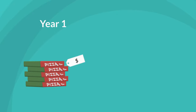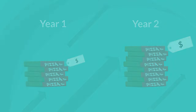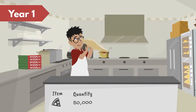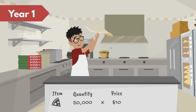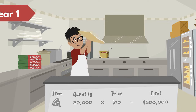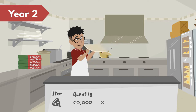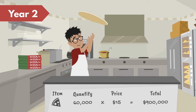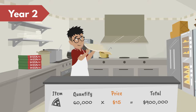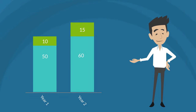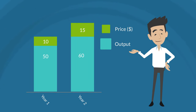Not necessarily. It is likely that both the prices and quantities increased from year 1 to year 2. Let's assume in year 1 the pizzeria produced 50,000 pizzas and charged $10 per pizza — 50,000 pizzas multiplied by $10 equals $500,000. Then in year 2, the pizzeria sold 60,000 pizzas multiplied by $15, which equals $900,000. Notice that income is calculated by multiplying the price of the goods by the quantity produced. In this case, the increase in income is the result of both an increase in price and an increase in output.